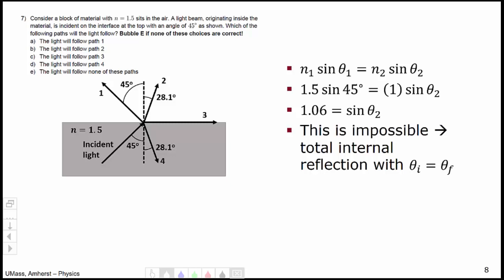Sine can't possibly be larger than 1. Therefore, the result must be total internal reflection, which must obey the law of reflection, theta i equals theta f. Which means the light will bounce back at a 45 degree angle, as shown. Which means that none of these choices is in fact correct. Given that sine theta 2 was 1.06, and given that in class I asked you to round in a similar problem, I ended up giving credit for choice 3.